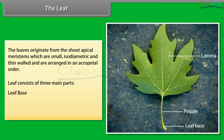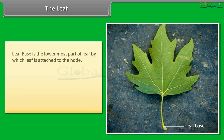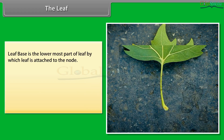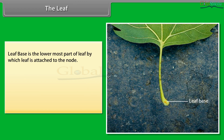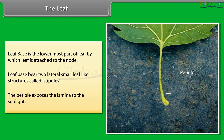Leaf consists of three main parts: leaf base, petiole, and lamina. The leaf base is the lowermost part of the leaf by which the leaf is attached to the node. The leaf base bears two lateral small leaf-like structures called stipules. The petiole exposes the lamina to sunlight.